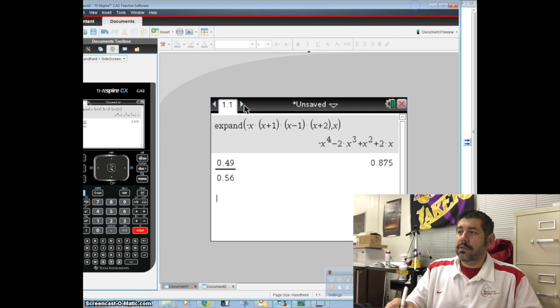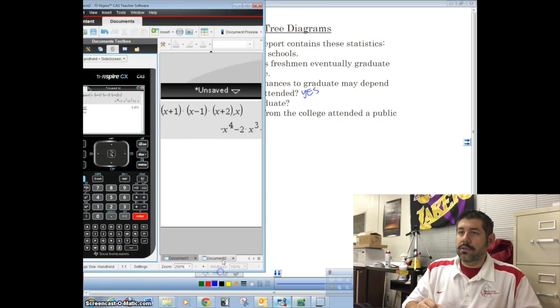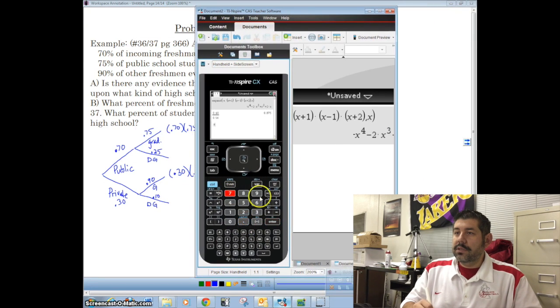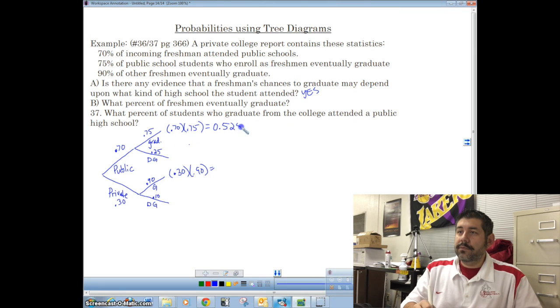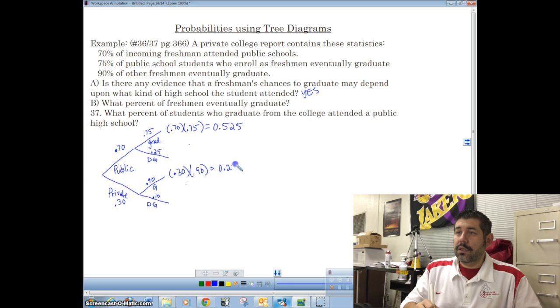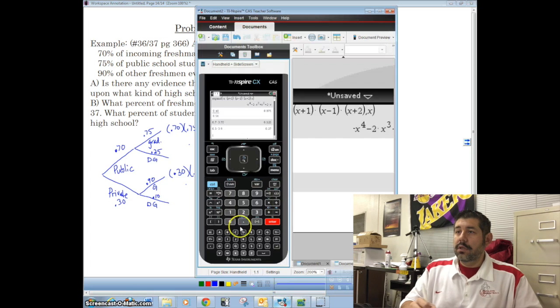0.7 times 0.75. Shrink this here. 0.7 times 0.75, it's going to give us 0.525. And then 0.3 times 0.9 is 0.27. So what is the percent? What percent of freshmen eventually graduate? Well, we can either graduate coming from public or graduate coming from private. So we're going to add these two together.